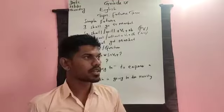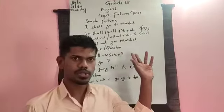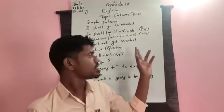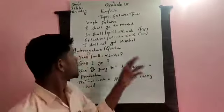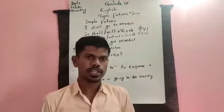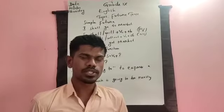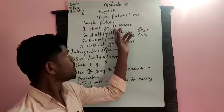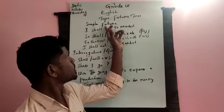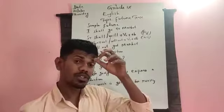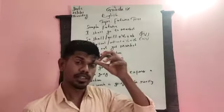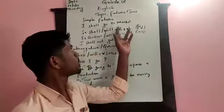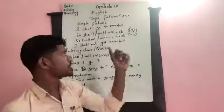Now let us see what simple future is, when we have to use it, and what structure we are supposed to follow while making simple future tense. Simple future tense is used to express an action which is going to happen in the future, and the action is one that will surely happen — at that time you use this future tense.